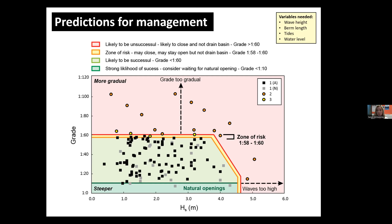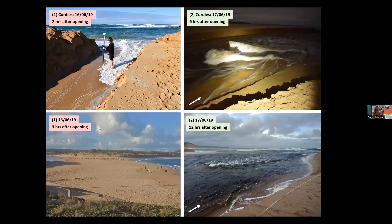What we hope this translates to is another tool for managers to use to help them decide when to open estuaries. We've got this model and also spreadsheets where managers can input the wave height, berm length, tides, and water level to get predictions about whether an opening will succeed. One of the cool things about this is it doesn't cost any money to use and can be used alongside existing tools as another piece of information. Berm length can be easily stepped out or measured in the field.